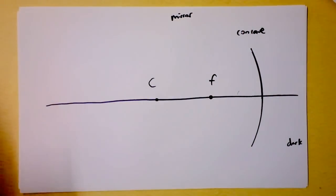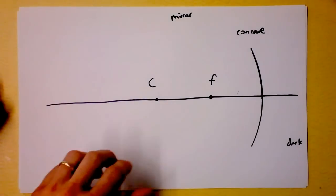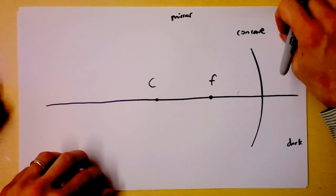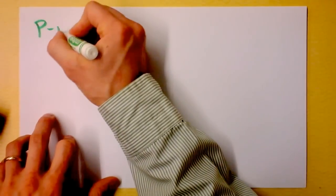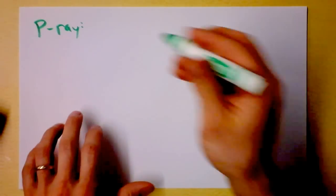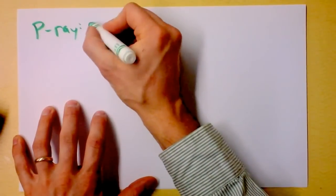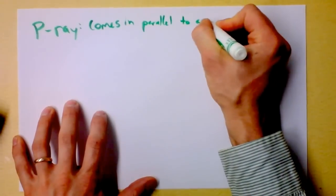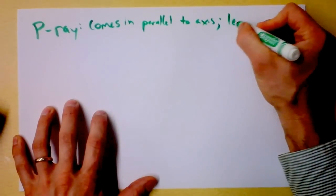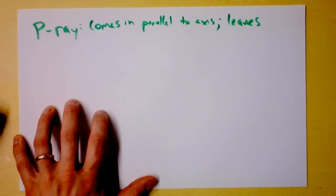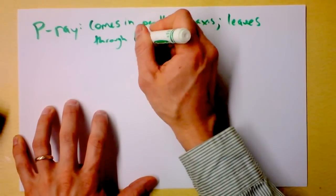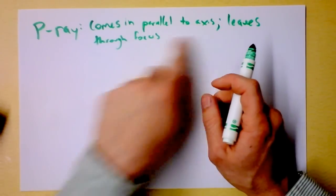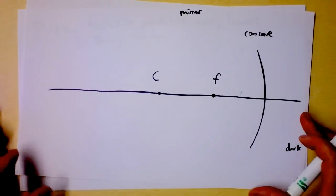It's time to fire up your ray gun. Let's shoot some rays. My first ray is the P-ray, and I'll summarize all these rays, define them for you a little bit, and draw them in their particular colors. The P-ray comes in parallel to the axis — that's why it's called the parallel or P-ray. It comes in parallel to the axis and leaves through the focus. Let's see what that looks like — a ray coming in parallel to the axis and leaving through the focus. We'll do a concave mirror first.